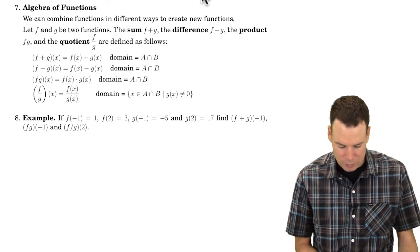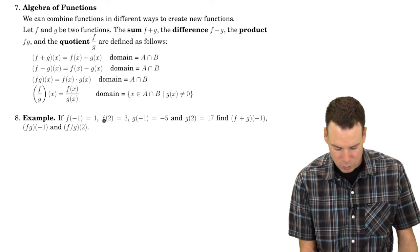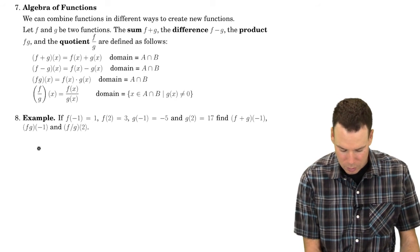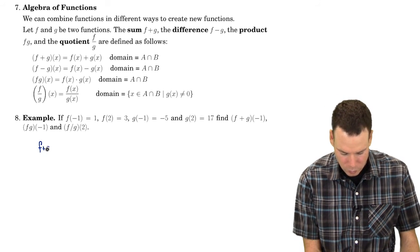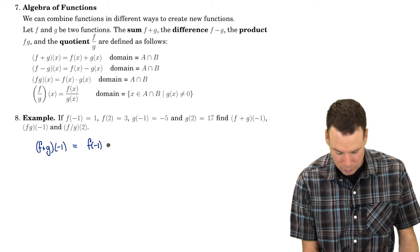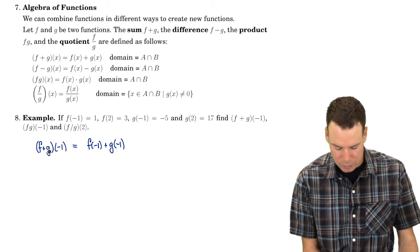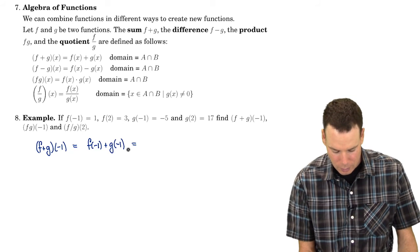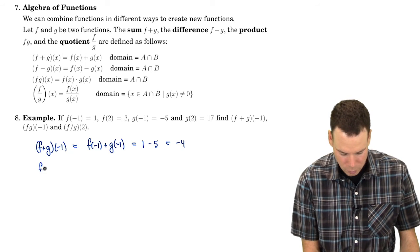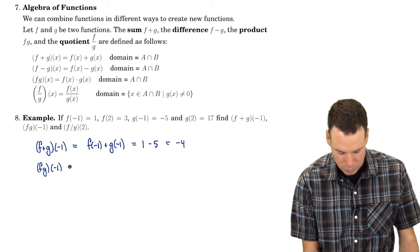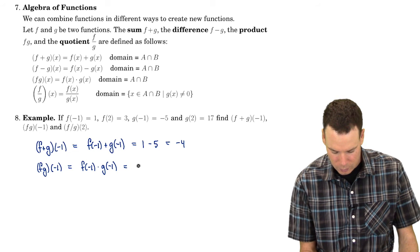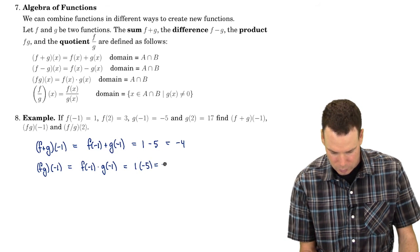Let's look at a brief example. Suppose we know: f at negative 1 is 1, f at 2 is 3, g at negative 1 is negative 5, and g at 2 is 17. What is f plus g at negative 1? By definition, that's f of negative 1 plus g of negative 1, which is 1 plus negative 5, giving negative 4. What is f times g at negative 1? That's f of negative 1 times g of negative 1, or 1 times negative 5, which is negative 5.